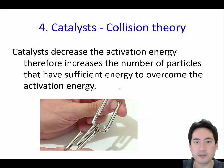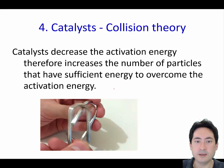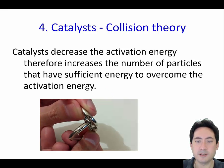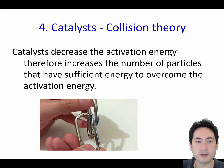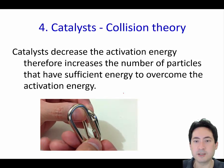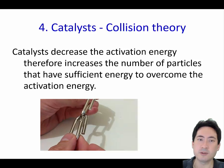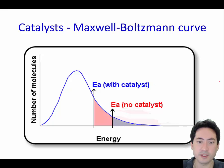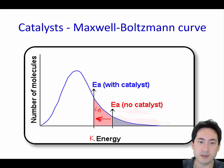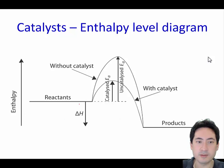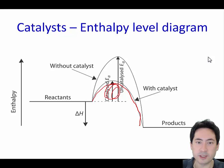Catalysts overcome activation energy by lining up molecules in an unusual way in order for them to react — much like a hand arranging metal pieces in an unnatural alignment, allowing reactions to occur much faster. On the Maxwell-Boltzmann diagram, a catalyst pushes down the activation energy needed, so all these extra particles with less kinetic energy can now react. On the enthalpy diagram, you draw a smaller curve to represent the lower activation energy with a catalyst.